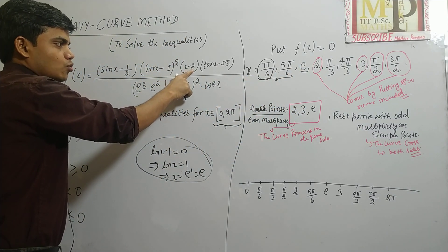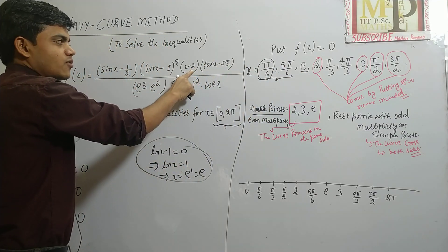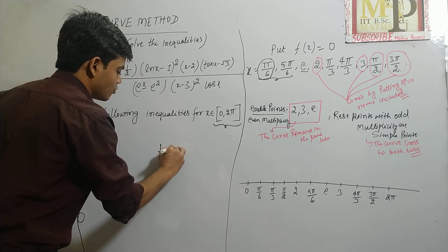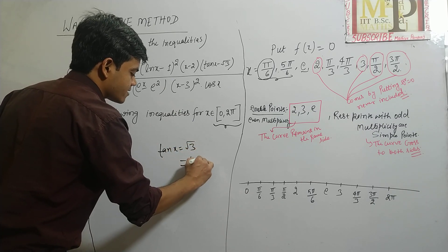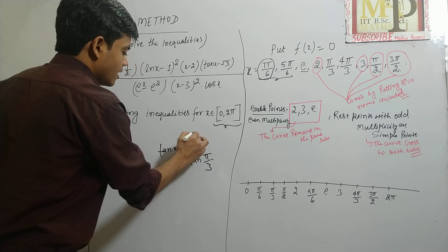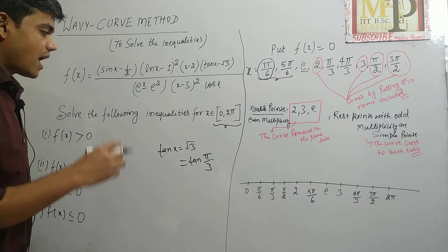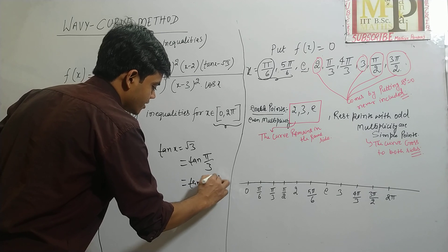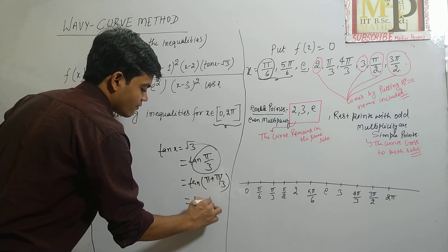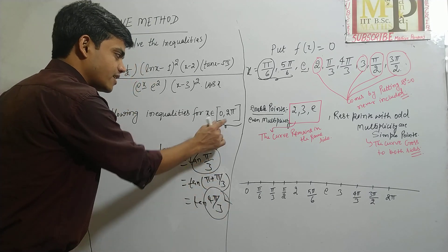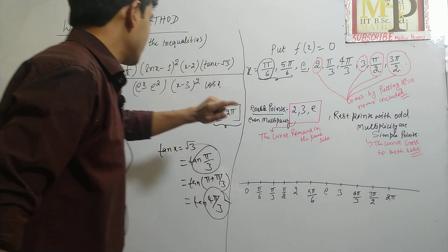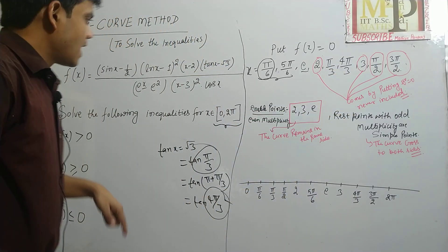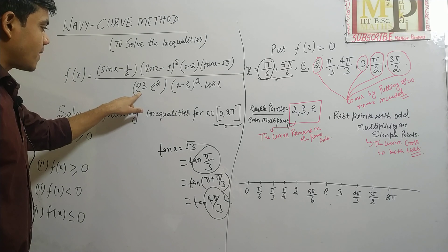x − 2 = 0 gives the root x = 2. For tan x = √3, we know tan(π/3) = √3 and also tan(π + π/3) = tan(4π/3) = √3. Since 4π/3 lies in the interval 0 to 2π, we take both π/3 and 4π/3 as roots from tan x − √3 = 0.